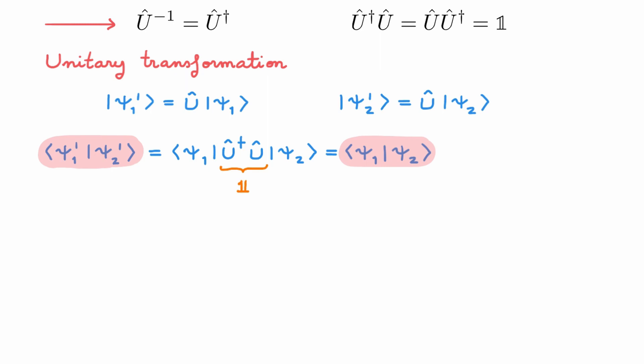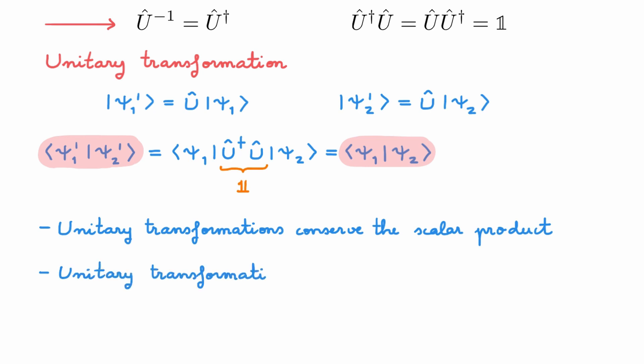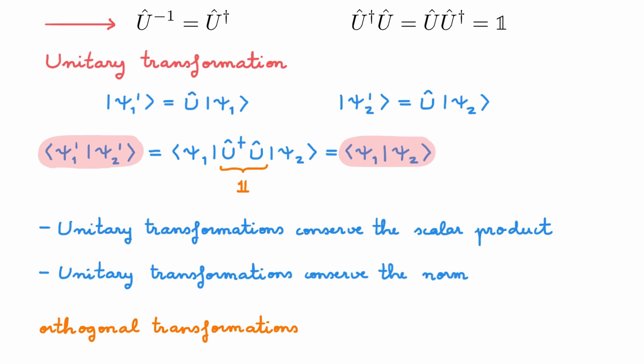This is the key reason why we care so much about unitary transformations in quantum mechanics: they conserve the scalar product. It immediately follows that they also conserve the norm of kets, because the norm is simply the scalar product of a ket with itself. So applying a unitary transformation allows us to change a state without changing its normalization. A well-known example is the time evolution of a quantum state, which conserves the norm and is described by a unitary operator called the time evolution operator. As a quick aside, unitary transformations are simply the generalization of orthogonal transformations from real to complex vector spaces.